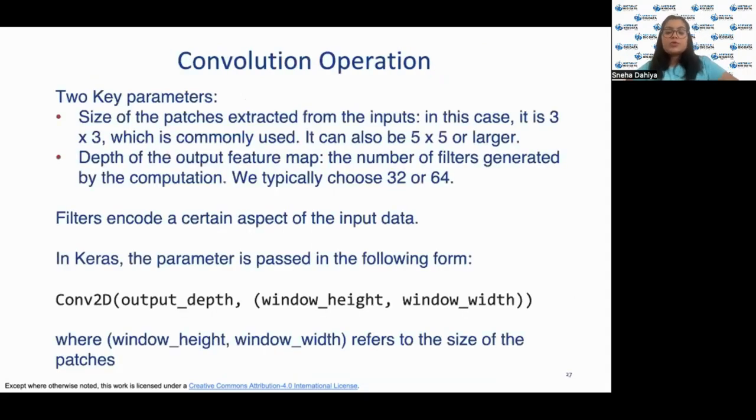Now talking about convolutional operation, when using Keras to create a convolutional layer, there are two key parameters that we need to consider: the size of the patches and the depth of the output feature map. Size of the patches are extracted from the input. In this case, it is 3 by 3, which is very commonly used, but there can be larger size patches. And talking about depth of the output feature map, that's the number of filters generated by the computation. We typically choose 32 or 64.